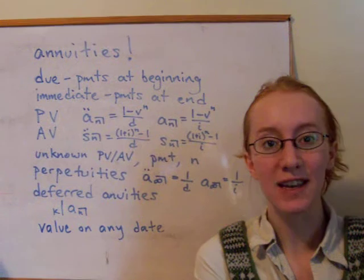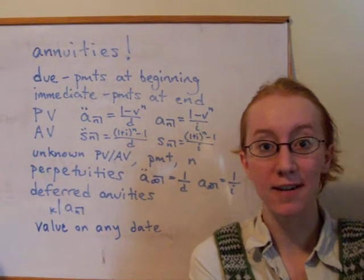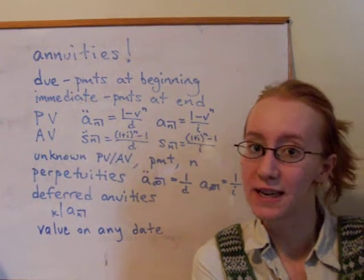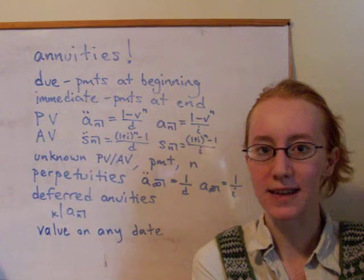And we started off by looking at level annuities, which means that the payment is equal. An annuity is just a sequence of payments at regular intervals, so every year or every month or every half year, anything like that. And a level annuity is where those payments are the same amount.